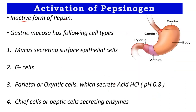Pepsinogen is the inactive form of pepsin. Pepsin is the active form. The gastric mucosa has different cell types like mucus-secreting surface epithelial cells, G cells, parietal or oxyntic cells which secrete HCl, and chief cells or peptic cells which secrete actual digestive enzymes.